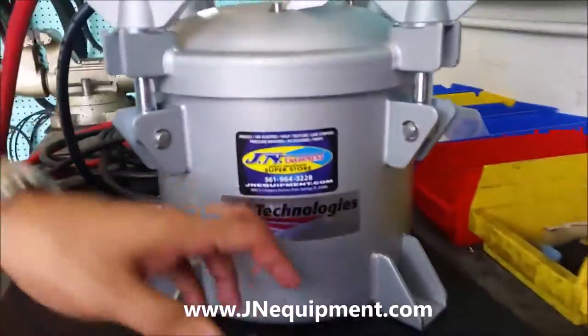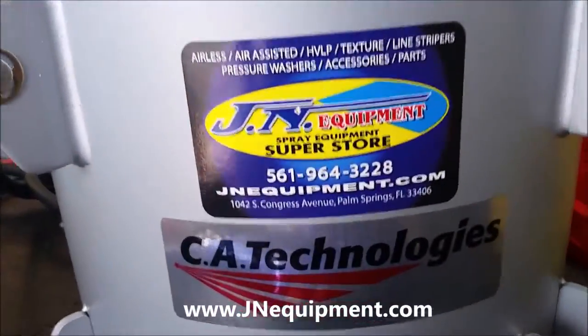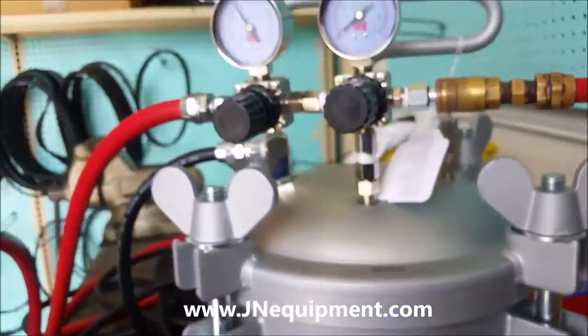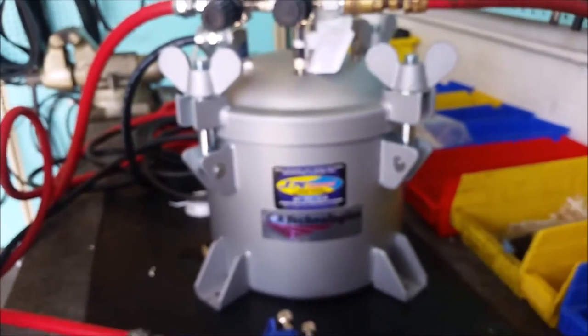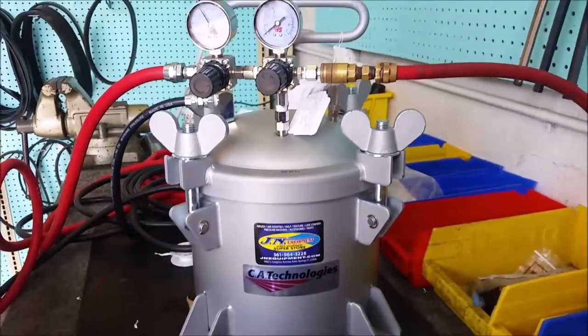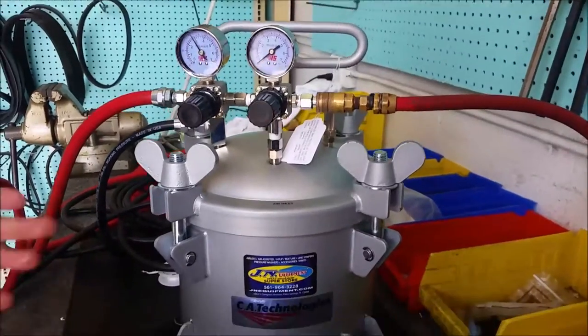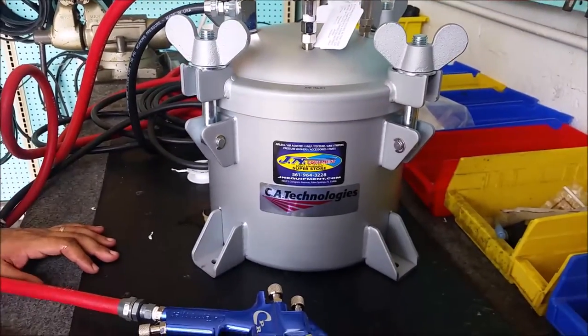And that, in a nutshell, is how you're going to set up your pressure pot, your regulators, your gun, and how you're going to set up your fluid and air to make sure that you're getting not only the spray pattern you're looking for, but the correct atomization and finish, so that you don't have to go back and forth constantly trying to figure out what's going on. This is how we do it here at JN Equipment.